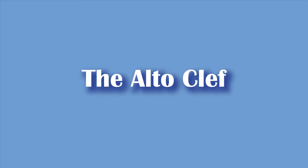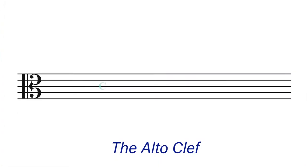The alto clef: when the C clef is placed on the third line of the staff, it becomes the alto clef, and the third line of the staff then becomes middle C. Once you can locate the third line as middle C, we can derive the names of the other spaces and lines. Going upward: the third space becomes D, the fourth line is E, the fourth space is F, and the fifth line is G.